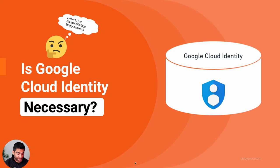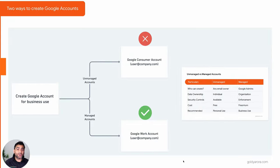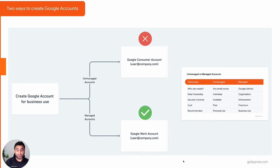Before we get into that, a quick piece of information: there are two ways to create Google accounts to use Google offerings. One is the consumer account — you might have a Gmail account in your personal life. You can also create that same Google consumer account with your own domain, such as user at goldie.com. But that is only recommended for personal use. If you plan to use Google offerings for your business, regardless of the size, you should always go with a Google work account.